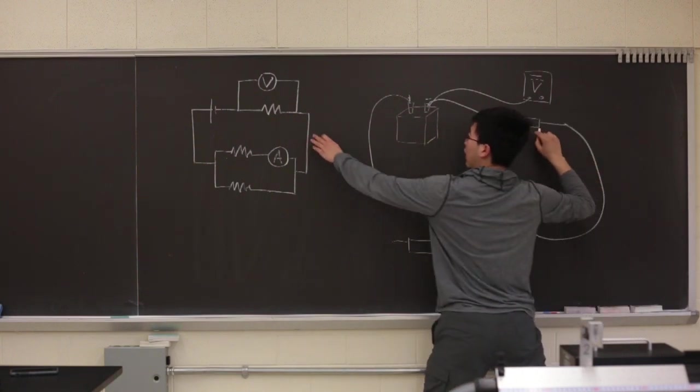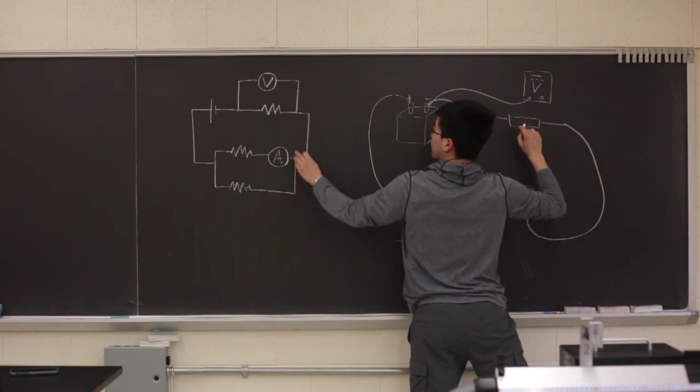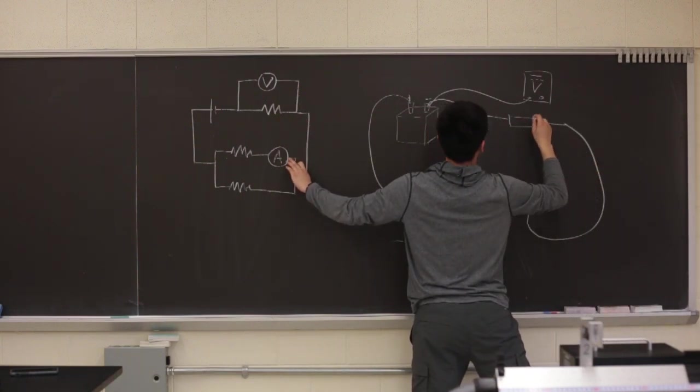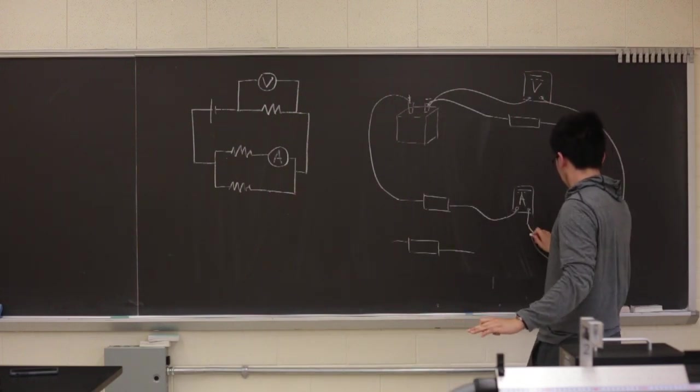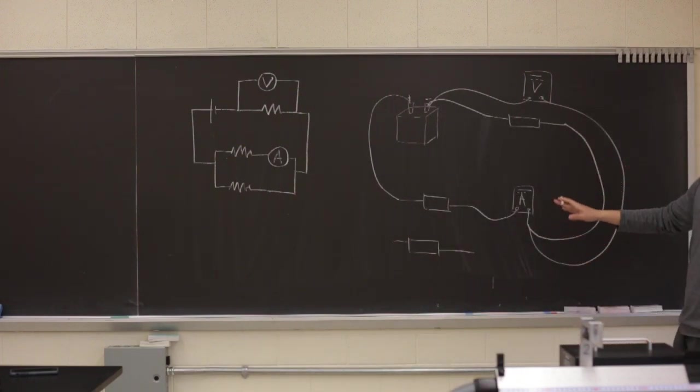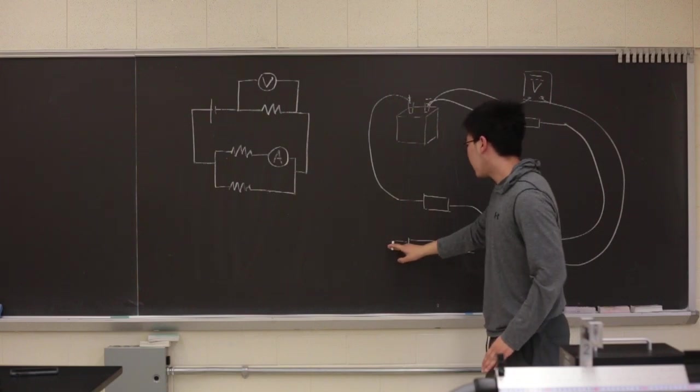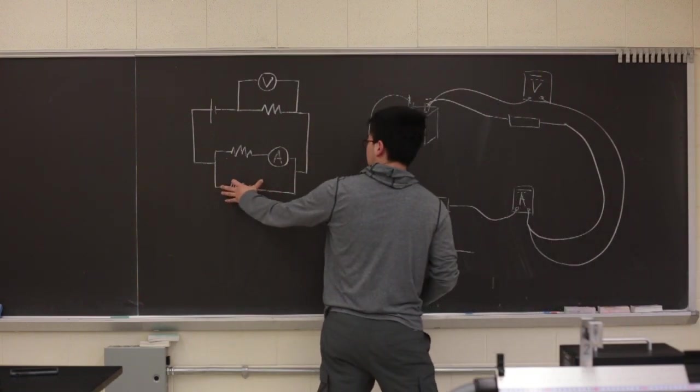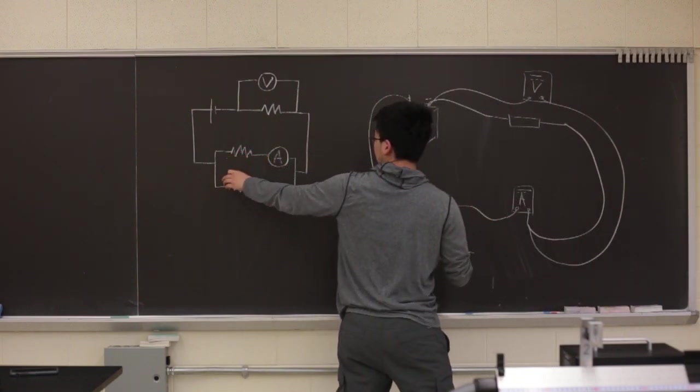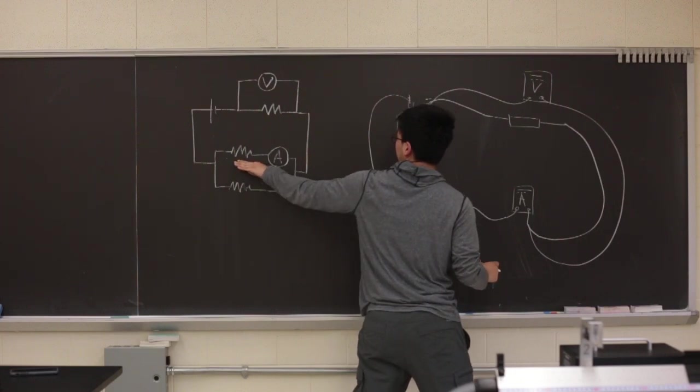And then you can connect the other side to the other side of the ammeter, which is like that. Right? And this side is basically parallel with this resistor and ammeter.